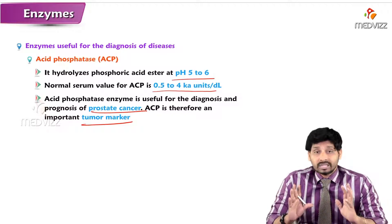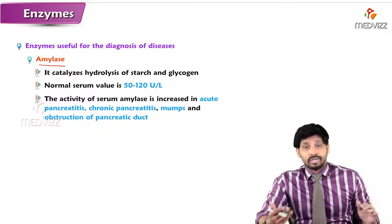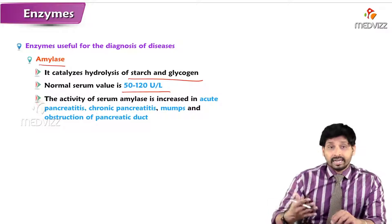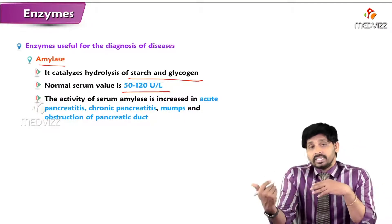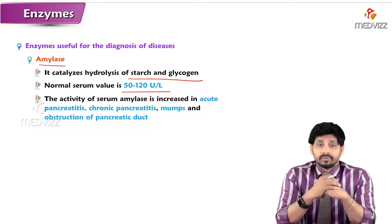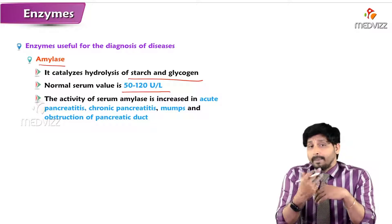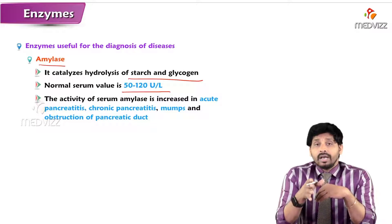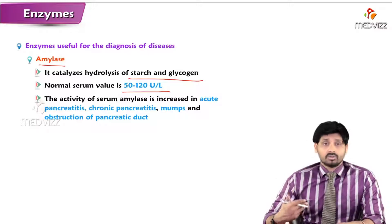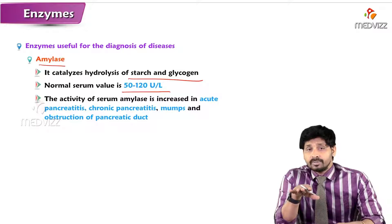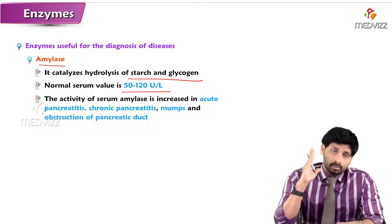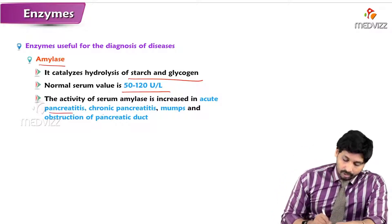Amylase is a digestive enzyme that hydrolyzes starch and glycogen. Its normal serum value is 50 to 120 units per liter. Serum amylase activity increases in acute pancreatitis, as pancreatic amylase is secreted from the pancreas. In pancreatic disorders, cancerous conditions, or acute pancreatitis, levels can reach 200 to 300 units per liter. Elevated amylase is also seen in chronic pancreatitis, mumps, and obstruction of the pancreatic duct.